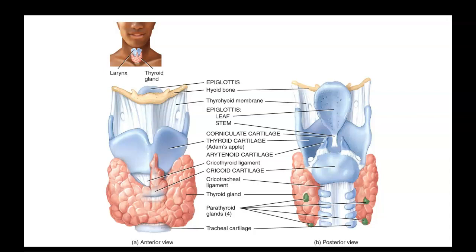The thyroid gland wraps around just beneath the thyroid cartilage and is very important in regulating metabolic rate and other body functions. On the back of the thyroid you have the parathyroid glands, which are important in regulating calcium.